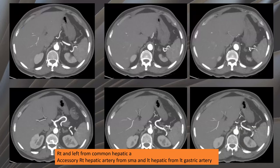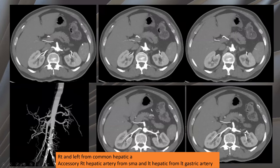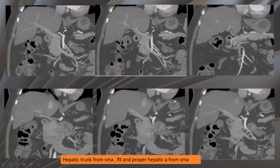Here, another patient where both the right and left hepatic arteries arise from the superior mesenteric artery, as seen in this example. Here, another patient with the right hepatic artery arising from the superior mesenteric artery. And here, another patient with the hepatic artery arising from the superior mesenteric artery, as seen here.